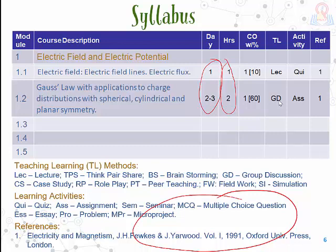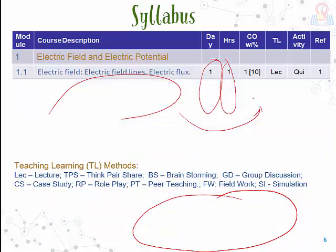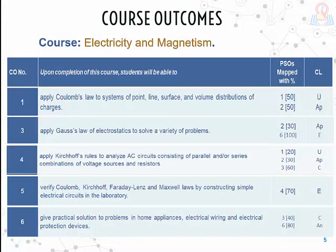This is the innovative way of writing the syllabus. If you write the syllabus like this, you can measure the attainment of the outcomes at the end. Every sub-module is linked with the course outcome, the course outcome is linked with the program specific outcomes, and the program specific outcomes are linked with the program outcomes. The attainment of PSO, PO, and CO can be easily computed using computer software at the end of the semester. Thank you very much for watching this video.